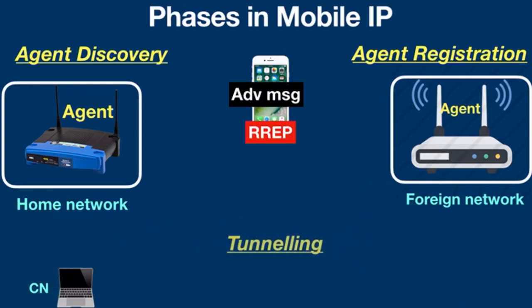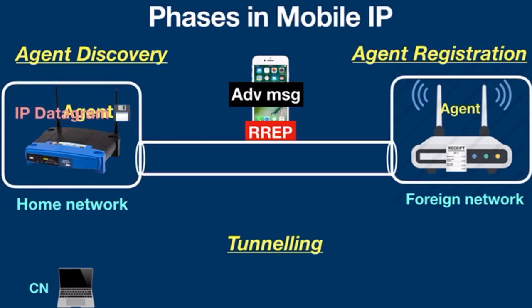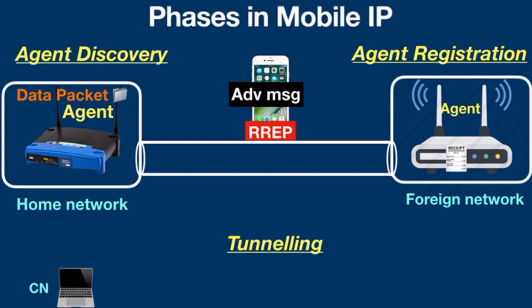The third phase is Tunneling. In this phase, Mobile IP establishes a virtual pipe for packets between a tunnel entry point and endpoint. It is the process of sending a packet via a tunnel, achieved by a mechanism called encapsulation. Encapsulation is used to forward an IP datagram from the home agent to the care-of address. Whenever the home agent receives a packet from the correspondent node, it encapsulates the packet with the source address as the home address and the destination as the care-of address.